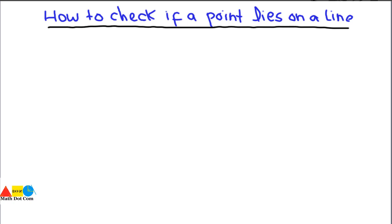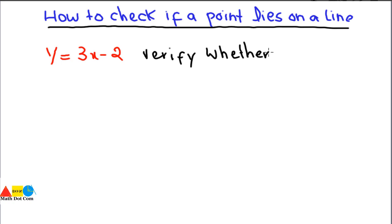Today we will see how you can check whether a certain point or ordered pair lies on a given line or not. For example, you will be given a line that is y equals 3x minus 2, and you will be asked to verify whether the point P(3, 4) lies on it or not.